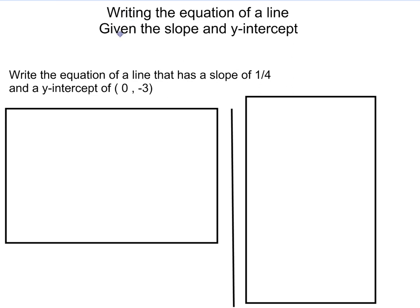The first one we're going to look at is giving the slope and a y-intercept. Write an equation of a line that has a slope of 1/4 and a y-intercept of (0, -3).